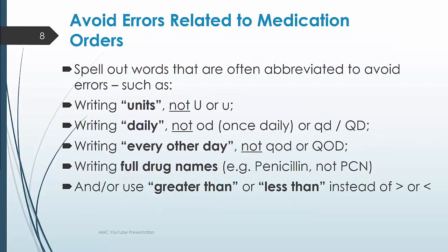To avoid medication errors, spelling out words that are often abbreviated is also recommended. For example, those listed on this slide relate to units, frequency, and name of the drug. You want to write 'units' — not 'U' — and 'daily' instead of 'OD' or 'QD,' because one little squiggle, especially in a handwritten order, could be miscommunicated and result in a medication administration error.